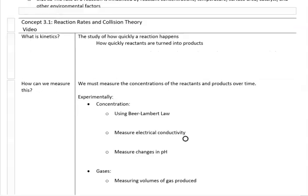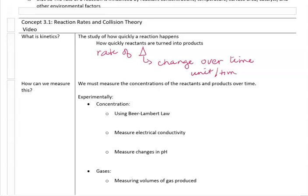We'll start by defining kinetics. Kinetics is the study of how quickly a reaction is happening — in other words, how quickly reactants are being turned into products. Since we're measuring how quickly something is happening, that means this is a rate of change. This little triangle, delta, means change. That means we're looking for a change in something over time.